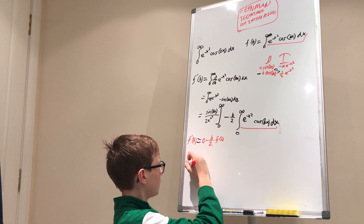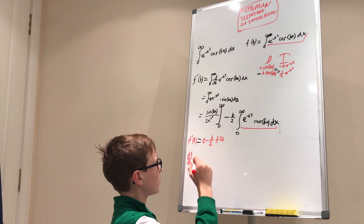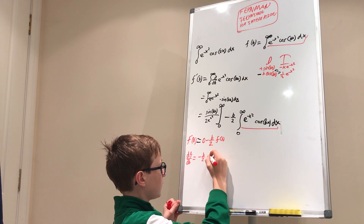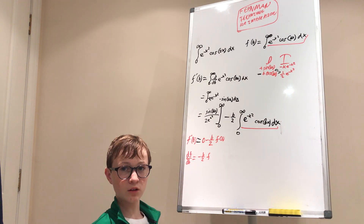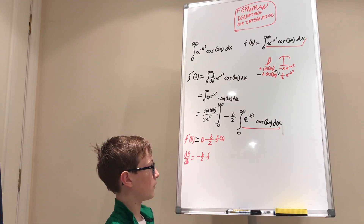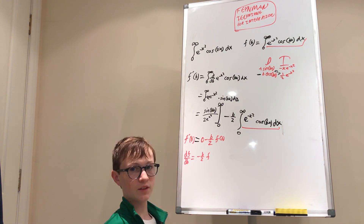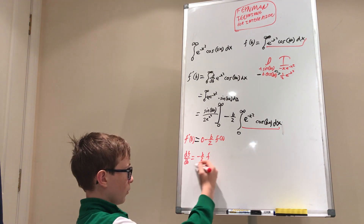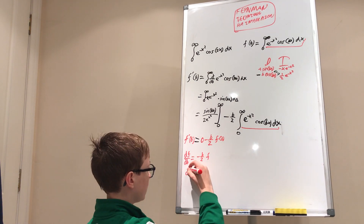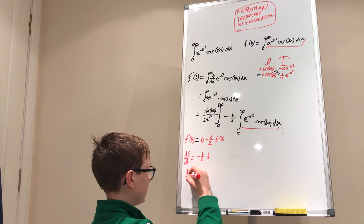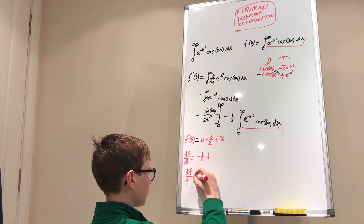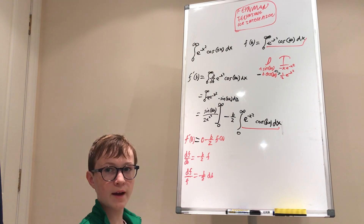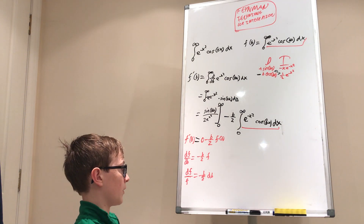So df/db equals negative b over two times f. This is a separable differential equation, so we multiply both sides by db and divide by f: df over f equals negative b over two times db. Now we just integrate both sides.